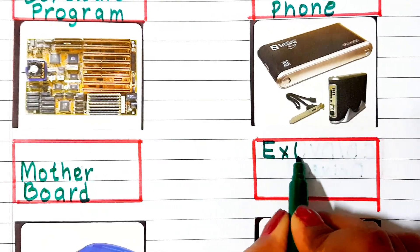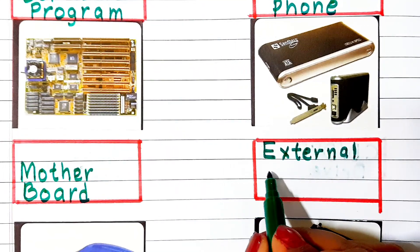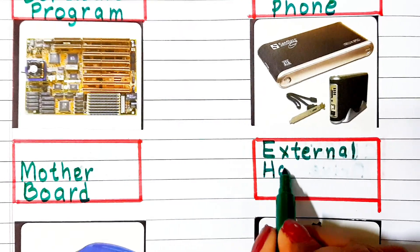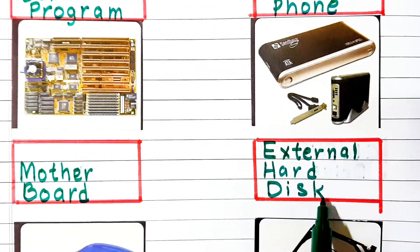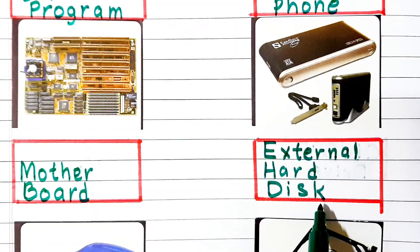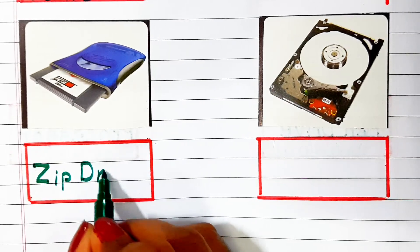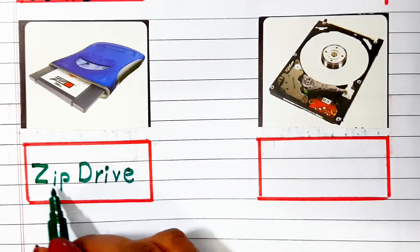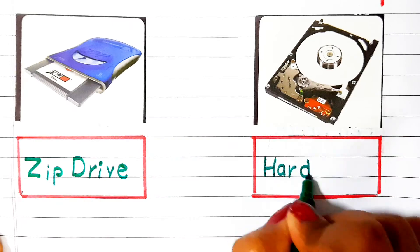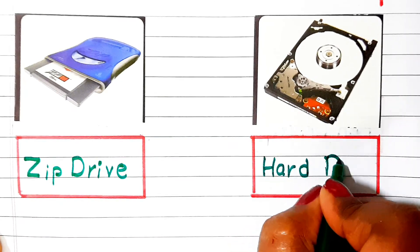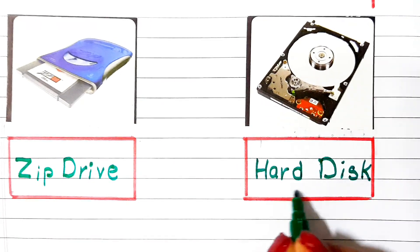E X T E R N A L H A R D D I S K — External Hard Disk. Z I P D R I V E — Zip Drive. H A R D D I S K — Hard Disk.